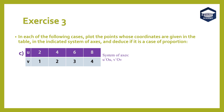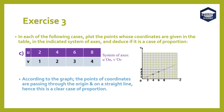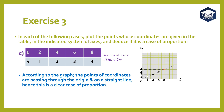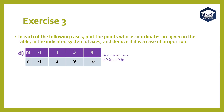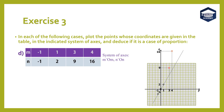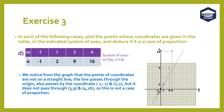Part C: According to the graph, the points of coordinates pass through the origin and lie on a straight line. Hence this is a clear case of proportion. Part D: We notice from the graph that the points of coordinates are not all on a straight line. The line passes through the origin and also through the coordinates (-1, -1) and (1, 2), but it does not pass through (3, 9) or (4, 16). So this is not a case of proportion.